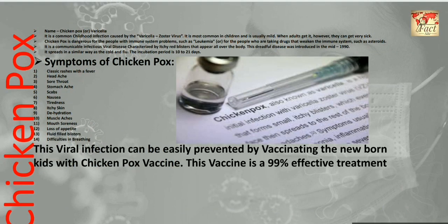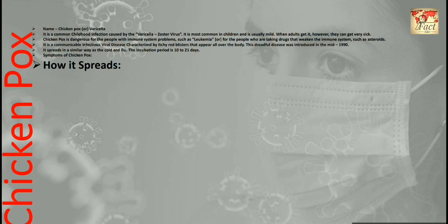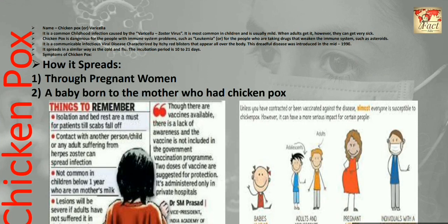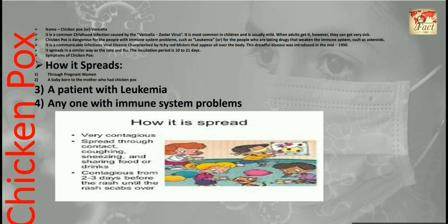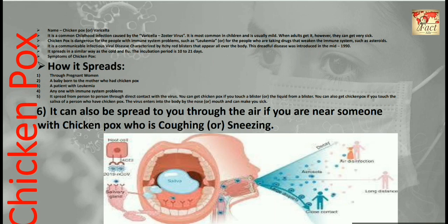The viral infection can be easily prevented by vaccinating newborn kids with the chickenpox vaccine, which is 99% effective in preventing the infectious disease in infants by strengthening their immune system. The sources by which chickenpox spreads include: through pregnant women, who can develop severe chickenpox; a baby born to a mother who had chickenpox; patients with leukemia; anyone with immune system problems; person-to-person through direct contact similar to coronavirus; and through the air if you are near someone with chickenpox who is coughing or sneezing.